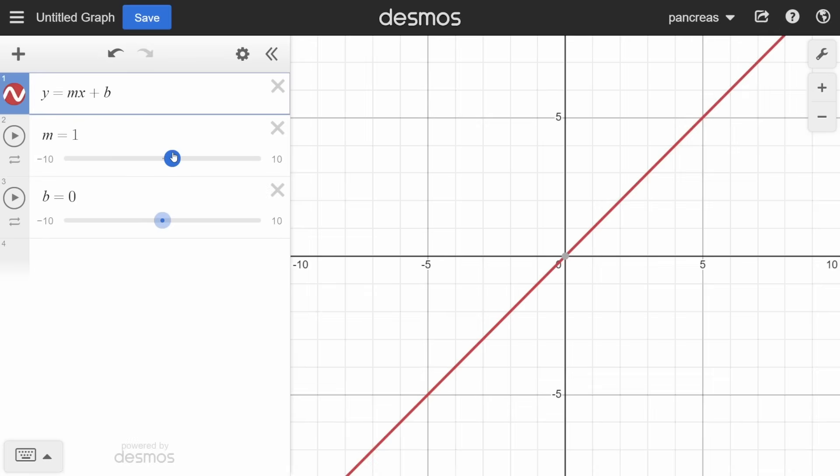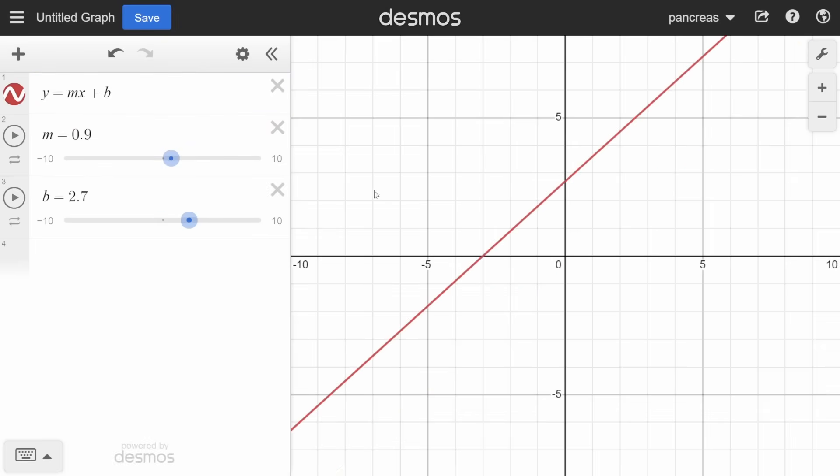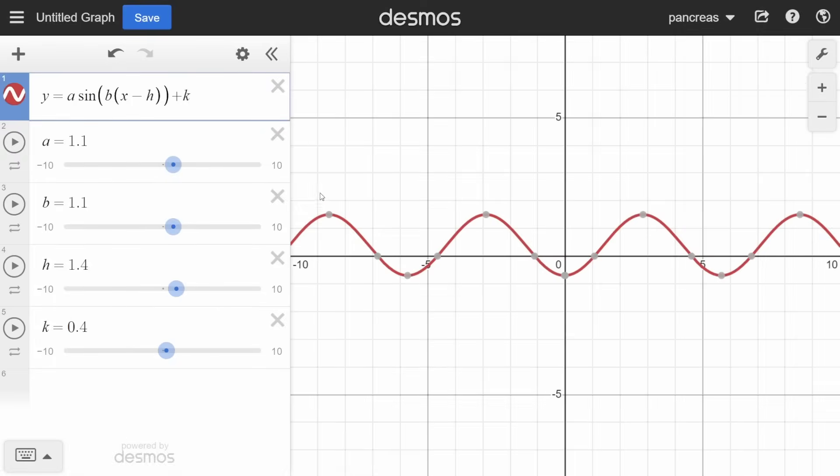Now let's look at the linear function. 'a' changes the slope of the line, where the further a gets from zero the steeper it is. 'b' shifts the line up or down.